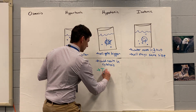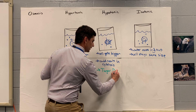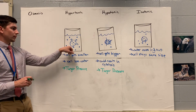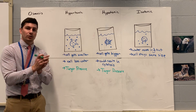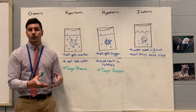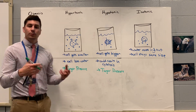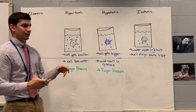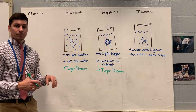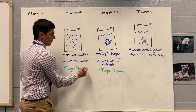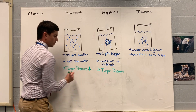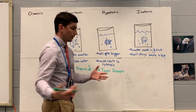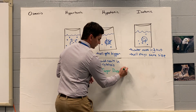Both hypertonic and hypotonic are going to have an effect on the turgor pressure. For hypertonic — if water is leaving the cell, the cell is getting smaller. In a plant cell, the vacuole is draining so it has less water inside. Think of blowing up a balloon: if the balloon is getting smaller, the pressure decreases. So if a plant cell is put in a hypertonic solution, the turgor pressure is going to decrease. If it's put in a hypotonic solution and the cell is getting bigger, the turgor pressure is going to increase — hopefully it does not burst.